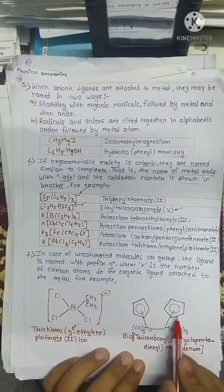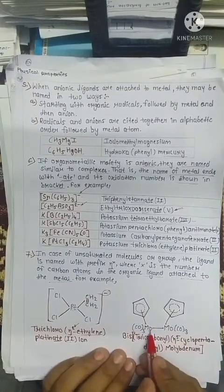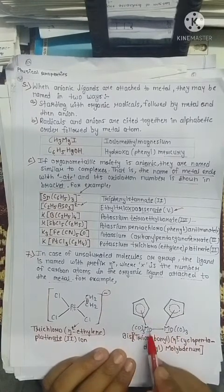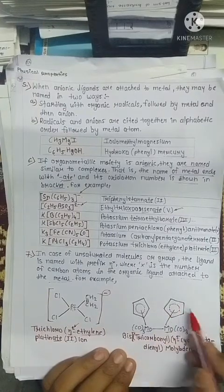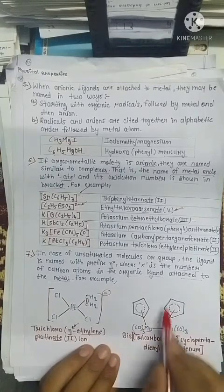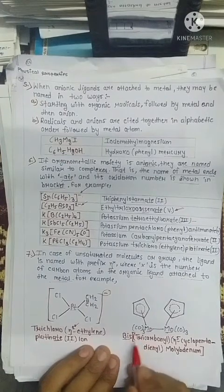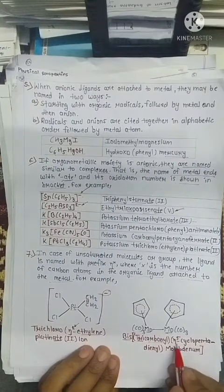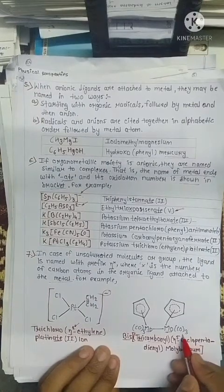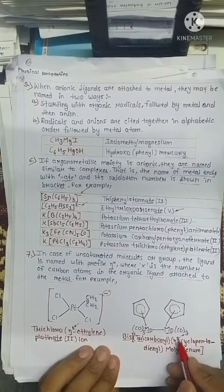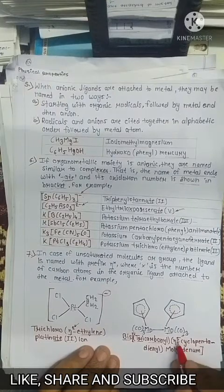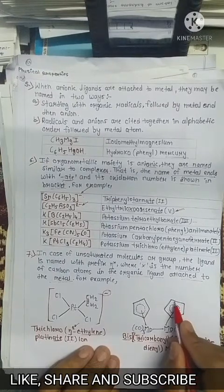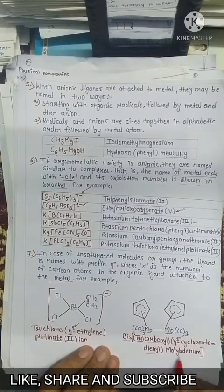Now see this example: there are 2 molybdenum atoms, each attached to 3 carbonyl groups, as well as to a cyclopentadienyl ring. The name is written with the carbonyl groups in brackets as tricarbonyl. The superscript 5 on η indicates that the molybdenum is attached to all 5 carbon atoms of the cyclopentadienyl ring. So the name is η⁵-cyclopentadienyl molybdenum tricarbonyl.